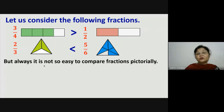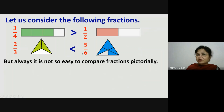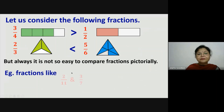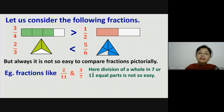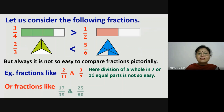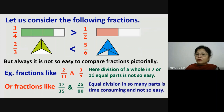But it is not always so easy to compare fractions pictorially. Here the denominators are very small, so it is easy to represent them pictorially. But if we consider fractions like two-elevenths and three-sevenths, division of a whole into seven or eleven equal parts is not so easy. Or fractions like seventeen thirty-fifths and twenty-five eighty-eighths — equal division into so many parts is time-consuming.